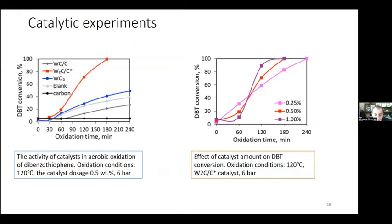Varying the amount of catalyst shows that the increase in catalyst dosage leads to an increase in DBT conversion. Note that the initial part of the kinetic curve is higher for low dosages, which indicates an increase in the induction period with an increase in the amount of catalyst.